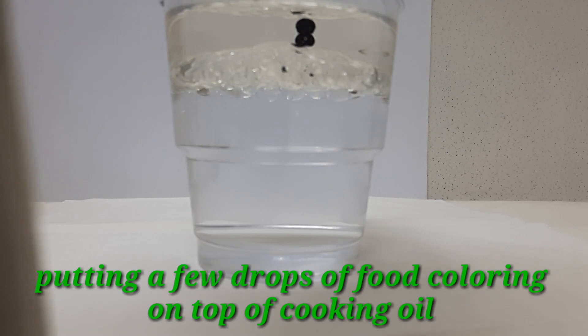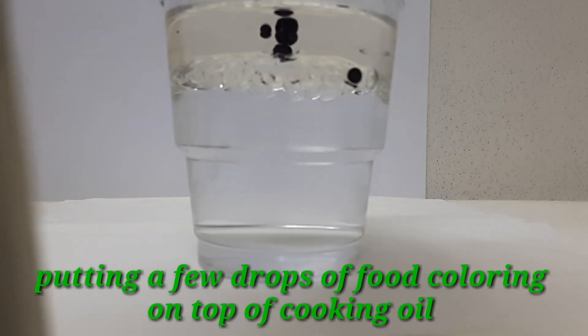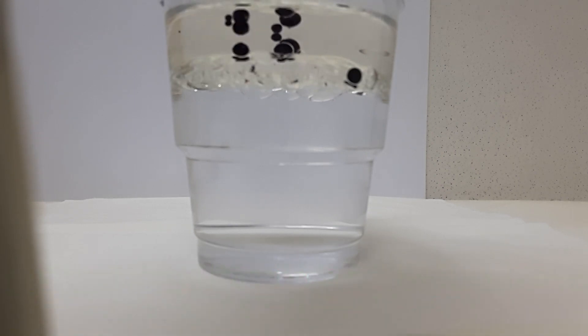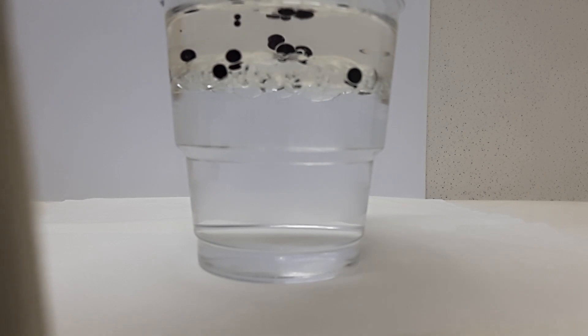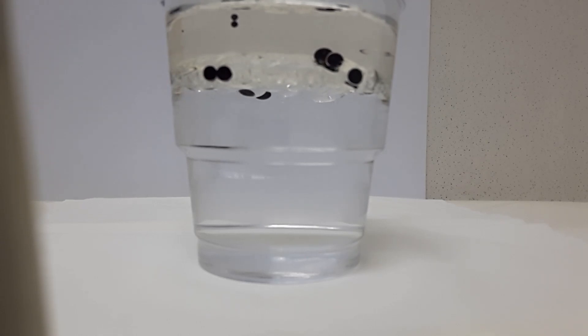We're going to put little food coloring on top of the oil. You can see the food coloring is at the end of the oil.